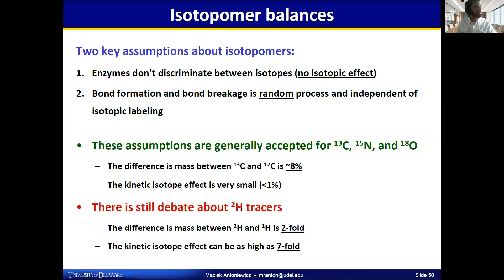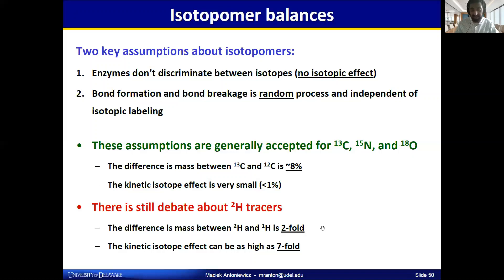However, if you use deuterium, that's a different story. Comparing deuterium versus normal hydrogen, there's a two-fold difference in mass, and people have observed that the kinetic isotope effect can be as high as sevenfold. That really challenges this assumption — you may measure that more or less flux is going through a particular pathway simply because you've used deuterium, convoluting your results. So I want to pause here and ask if there are any questions about 13C metabolic flux analysis.